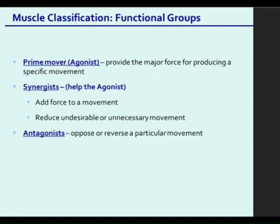The agonist is the prime mover — the reason that joint is moving. The synergist is the helper: another muscle crossing the same joint in the same way, so a synergist to a flexor would also be a flexor, located on the same side. An antagonist is located on the opposite side of the joint, doing the opposite action — so one is a flexor and the other is an extensor, or one is an adductor and the other is an abductor, or one is a medial rotator and the other is a lateral rotator.